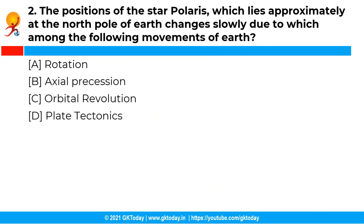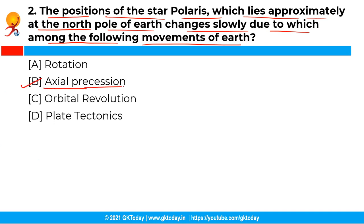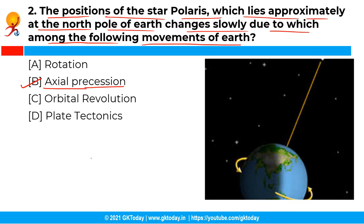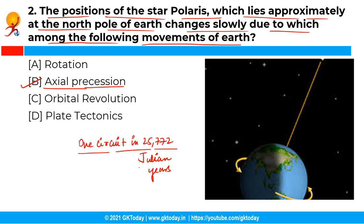The next question: the position of the star Polaris, which lies approximately at the north pole of Earth, changes slowly due to which among the following movements of Earth? The correct answer is Option B, i.e. Axial Precession. The precession of the Earth's axis has observable effects — the positions of the south and north celestial poles appear to move in circles against the space-fixed backdrop of stars, completing one circuit in 25,772 Julian years. Thus, while today the star Polaris lies approximately at the north celestial pole, that will change over time and other stars will become the north star.